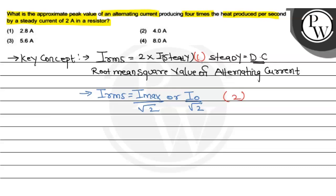So from first and second formulas, I_rms equals 2 times I_steady, and the other formula is I_max by root 2. So we can see that I_max by root 2 equals 2 times I_steady.